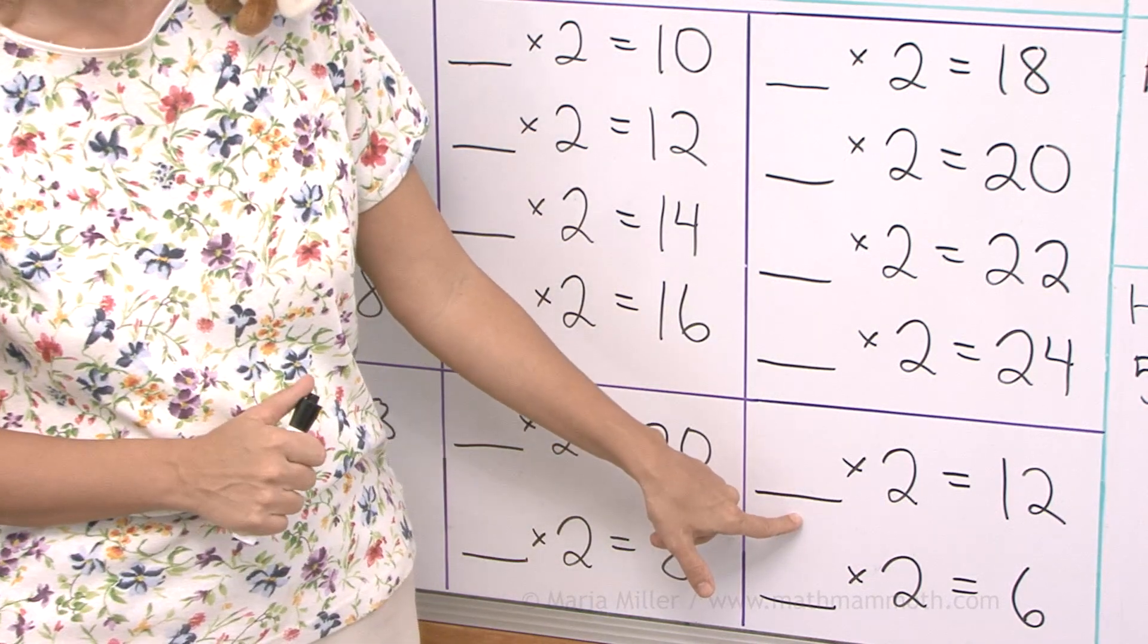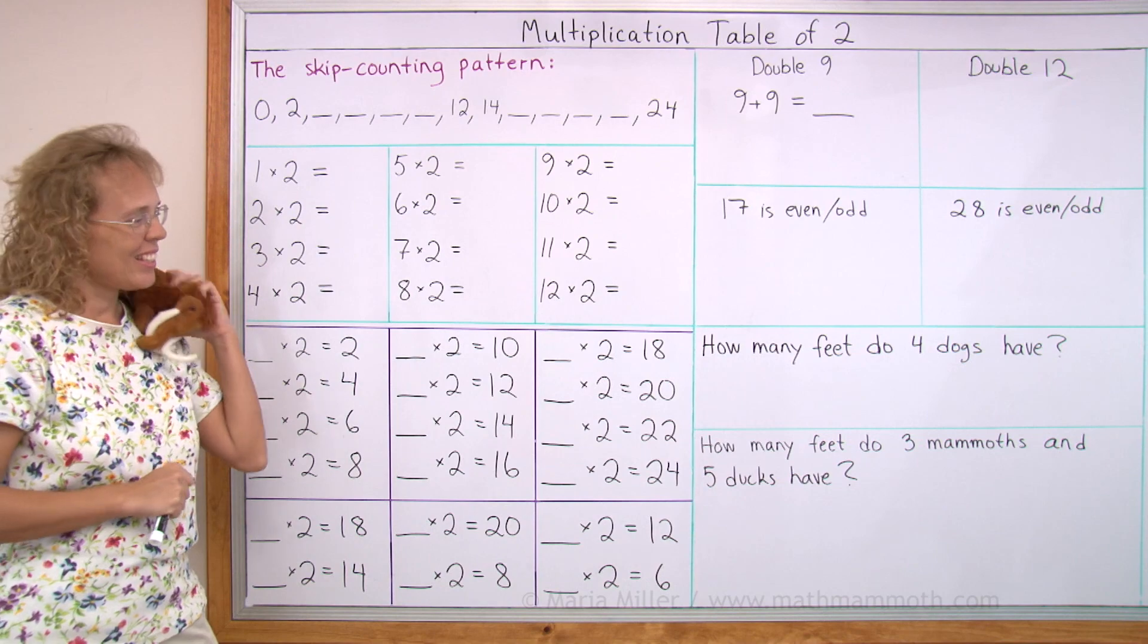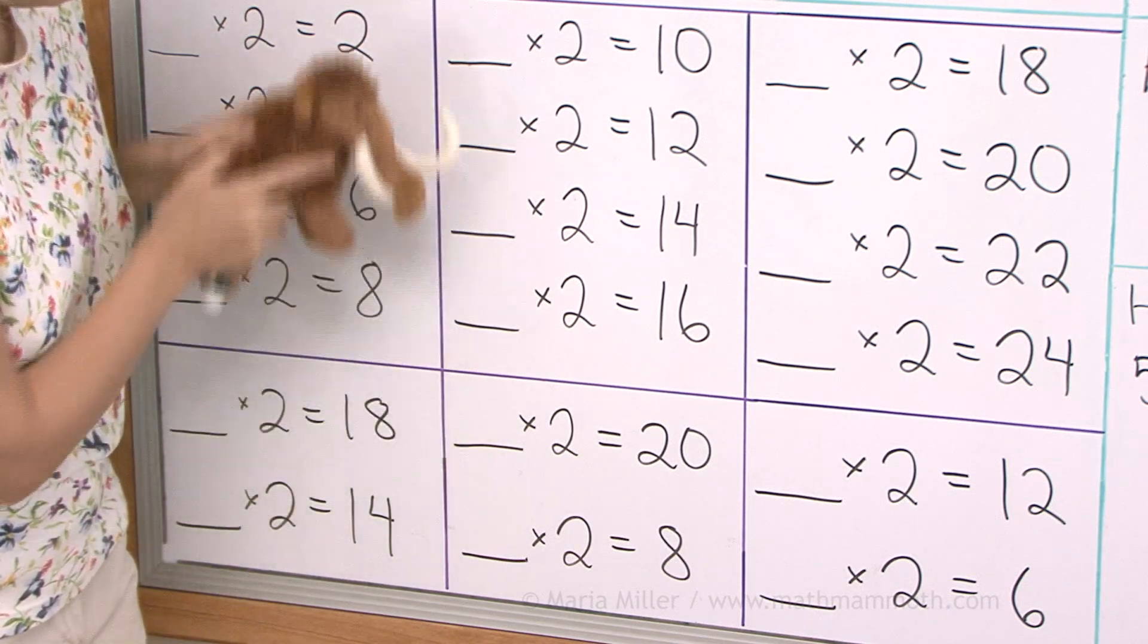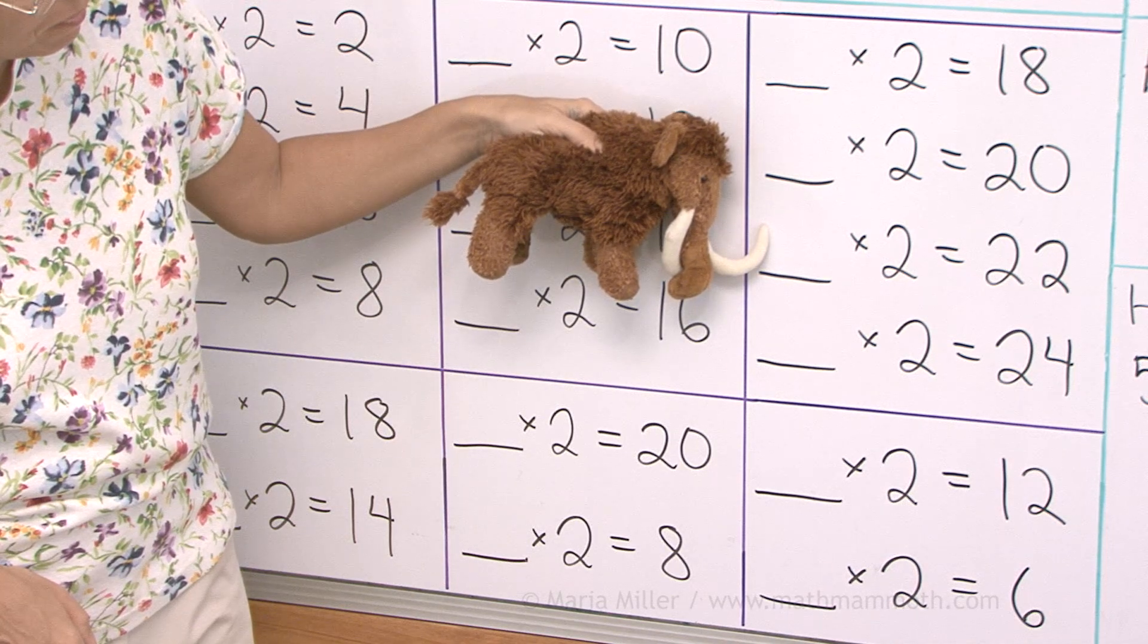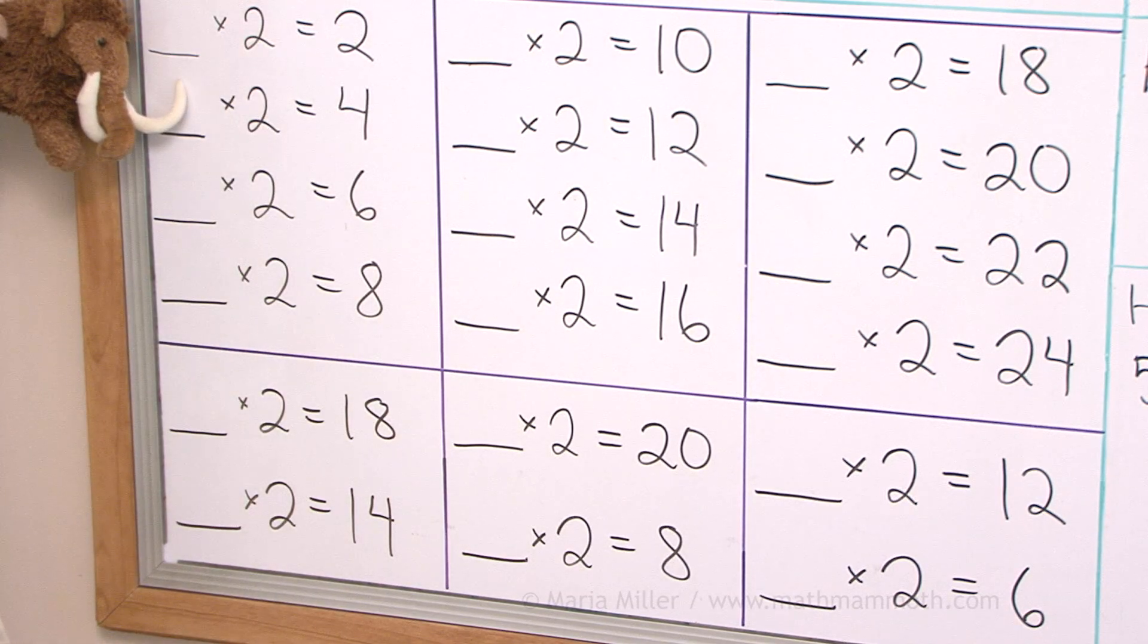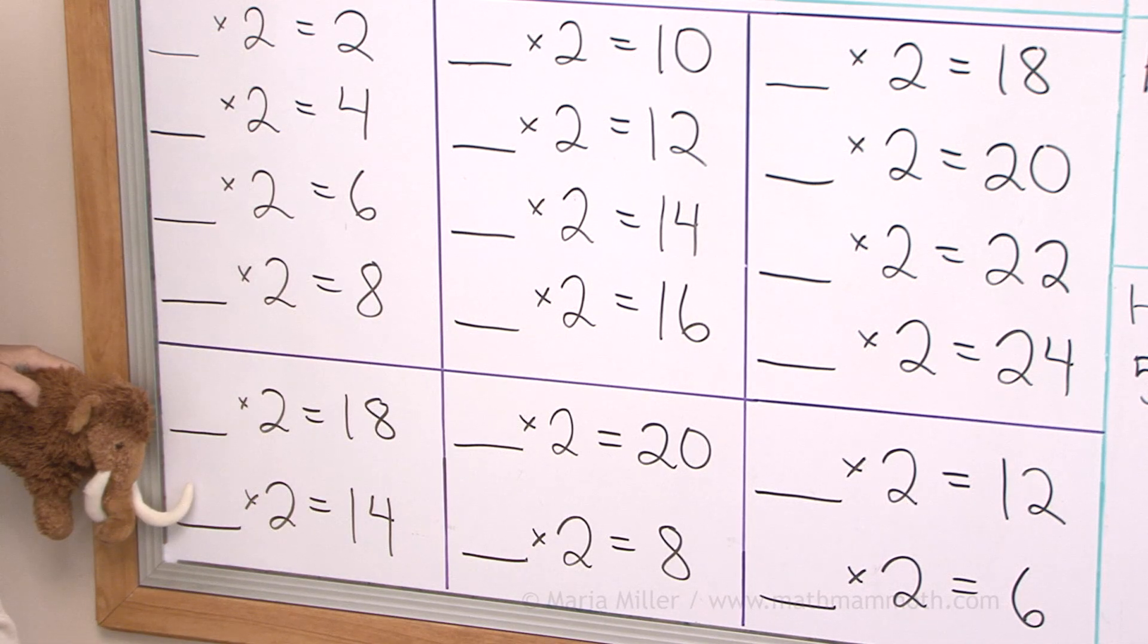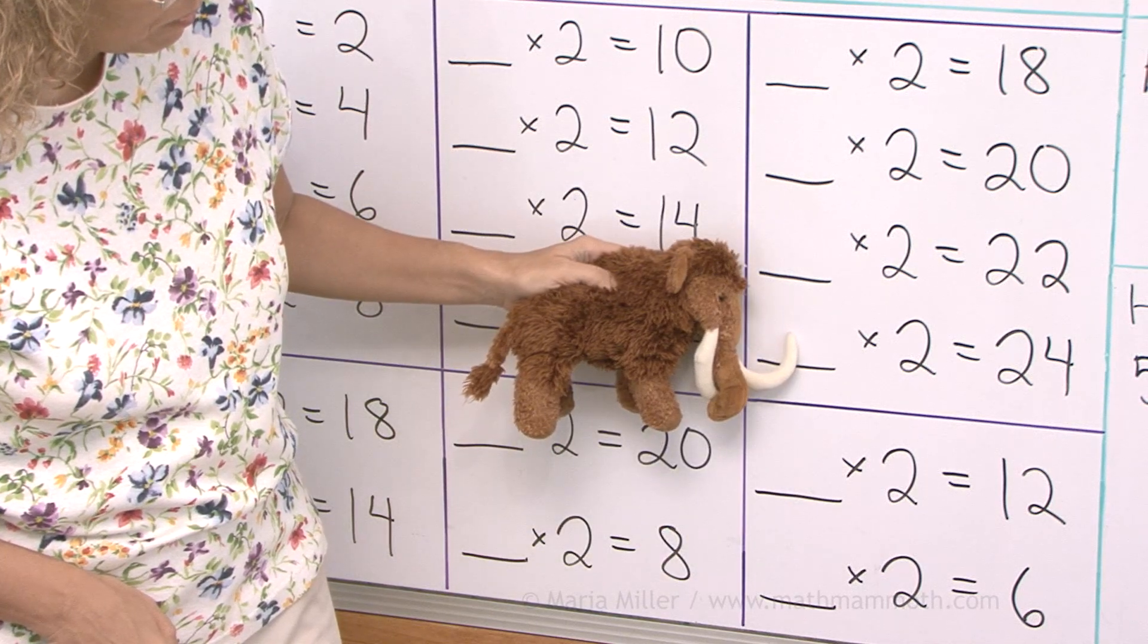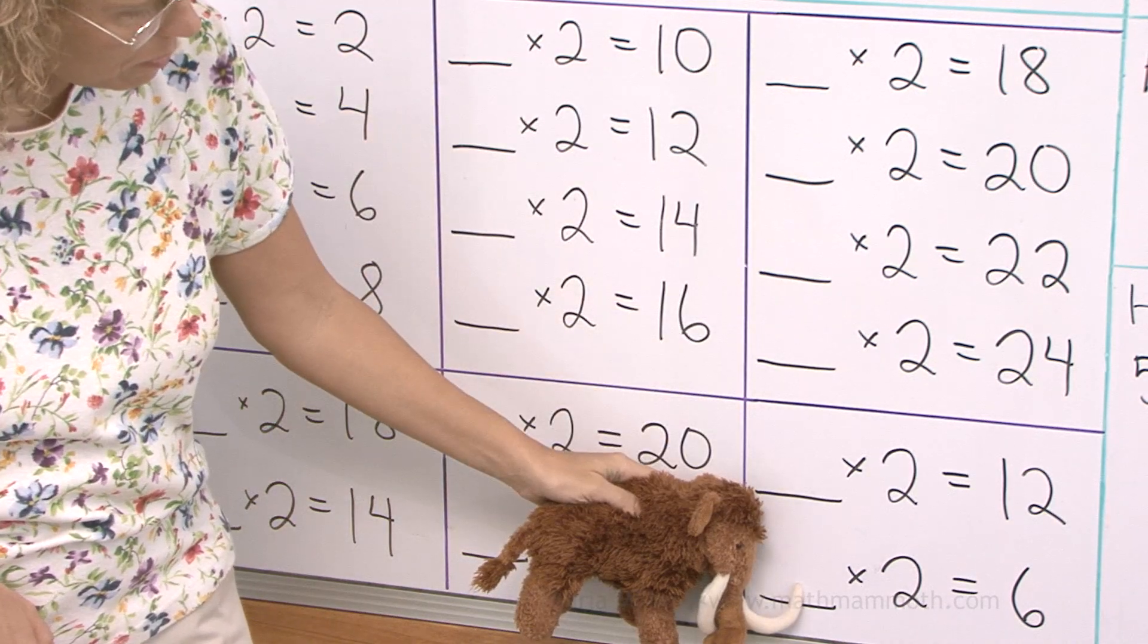How many times two is 20? 10. How many times two is 12? 6. How many times two is 18? 9. And again with Mathi. Let's try to be fast. All right.